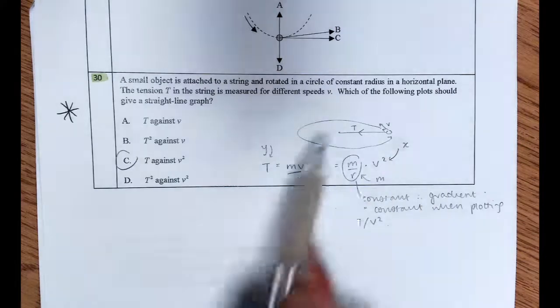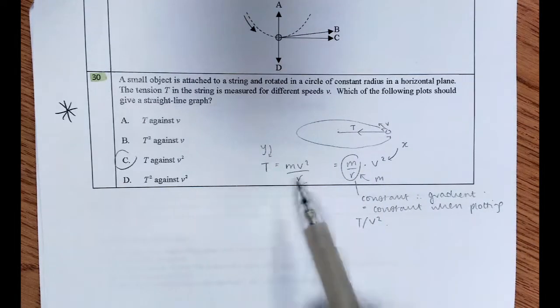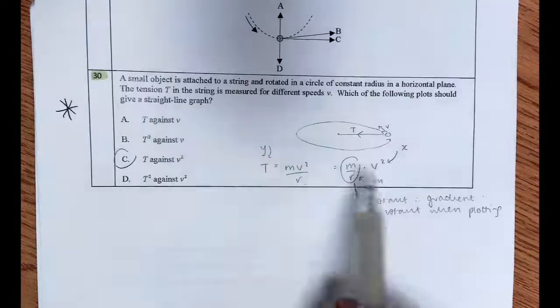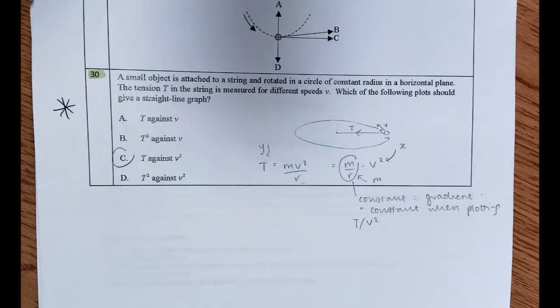So I've sketched it out so you can see tension is going in. I know that I can equate that force value to mv squared over r, because that's my centripetal force equation. I can write that as t equals m over r multiplied by v squared to get it in the form of y equals mx.